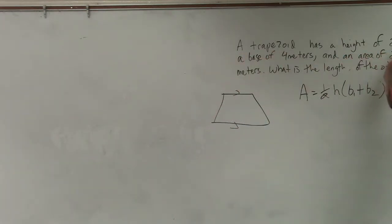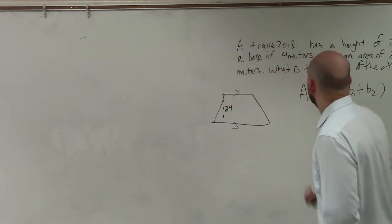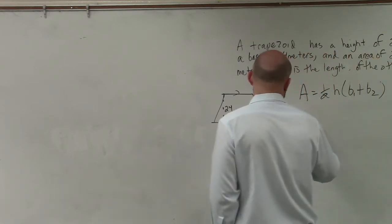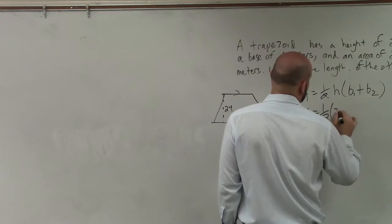It says the height of the trapezoid is 24 meters. Then it says the area is 264. So I'm going to write area 264 equals 1/2, the height is 24, times...